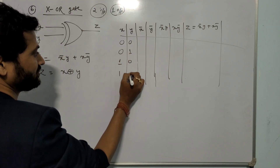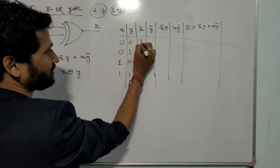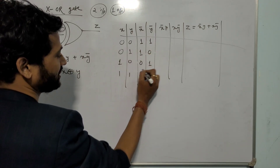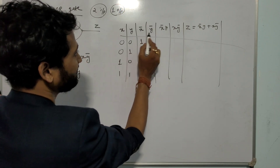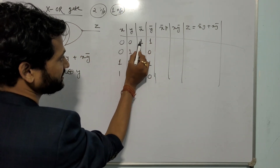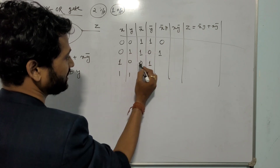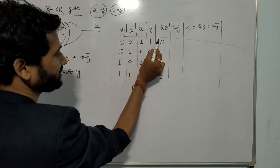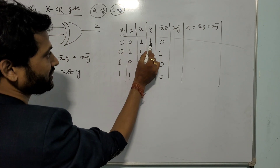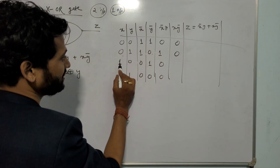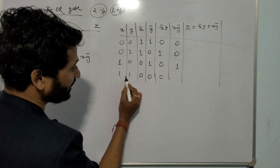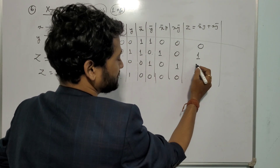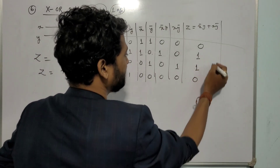For XOR gate truth table with inputs X and Y having combinations 0-0, 0-1, 1-0, 1-1: X bar is 1,1,0,0 and Y bar is 1,0,1,0. X bar times Y gives 0,1,0,0 and X times Y bar gives 0,0,1,0. Adding both, the final output Z is 0, 1, 1, 0.